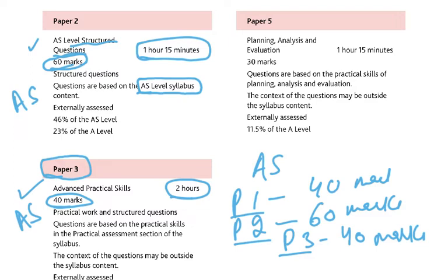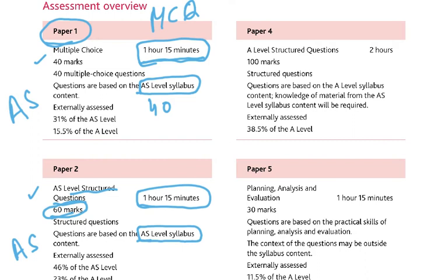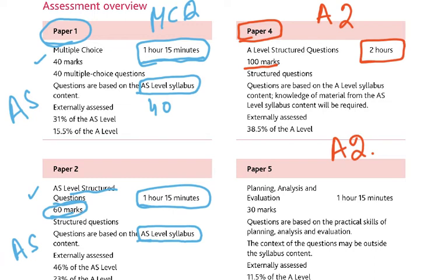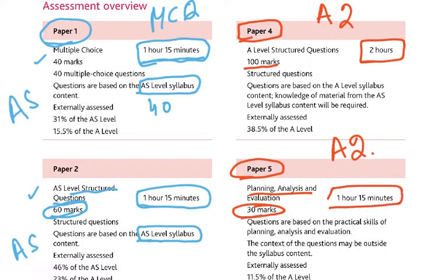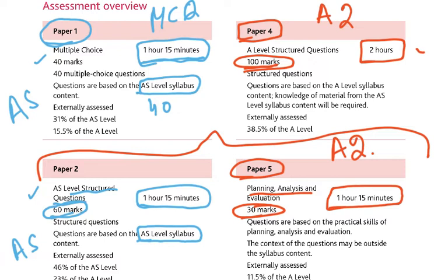Now coming to the A2 syllabus: it covers just Paper 4 and Paper 5. Paper 4 is very difficult — it's for 100 marks and 2 hours, a very challenging paper. Paper 5 is planning, analysis and evaluation — another very difficult paper, worth 30 marks and 1 hour 15 minutes. Paper 2 and Paper 5 are scheduled on the same day.